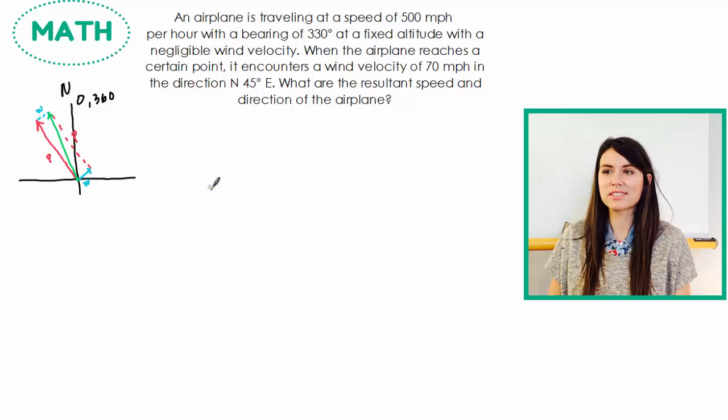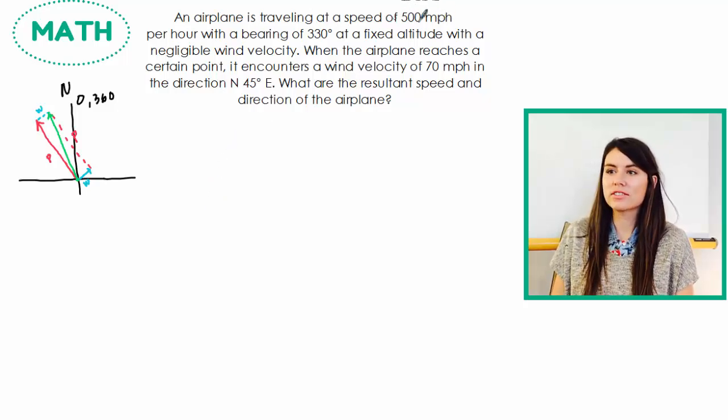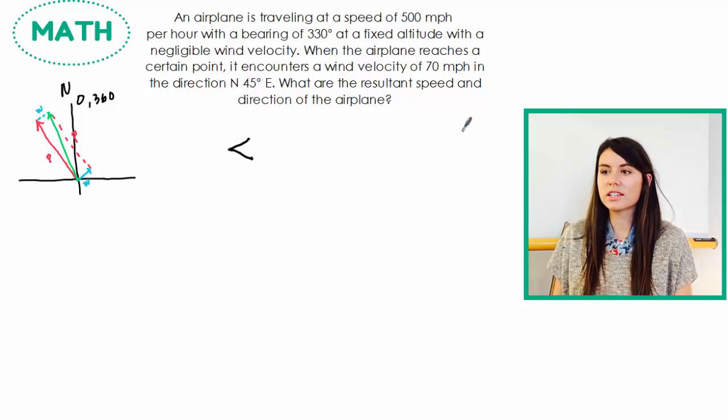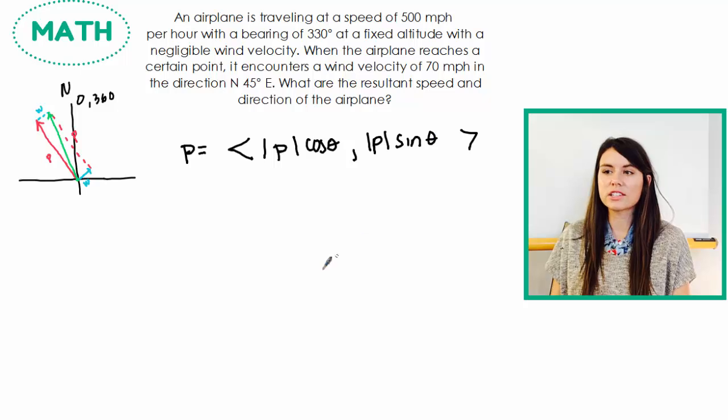Alright, so let's do this. So we know that our airplane is traveling 500 miles per hour at a bearing of 330 degrees. So we have this really nice formula that helps us find the components of a vector. It's the magnitude of that vector times cosine of the angle, and then the magnitude times sine of the angle.